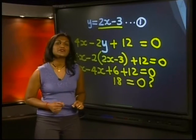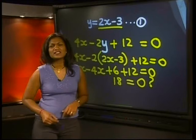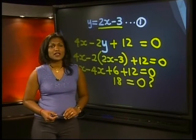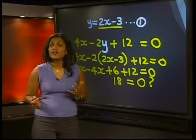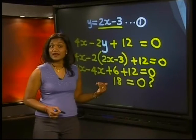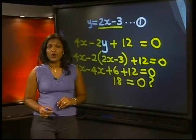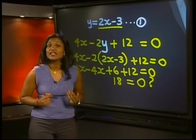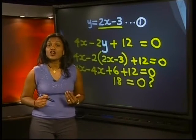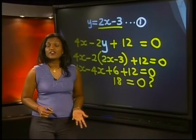Wait a minute. What's happened to our variable? How can 18 be equal to 0? This statement is obviously false. Now what does this tell us about our original equations? If our variable drops out, as it did here, and we get a false statement like 18 equals 0 or 10 equals minus 2, then it means that this equation cannot be solved. There cannot be any answers that satisfy both equations. There is no solution.